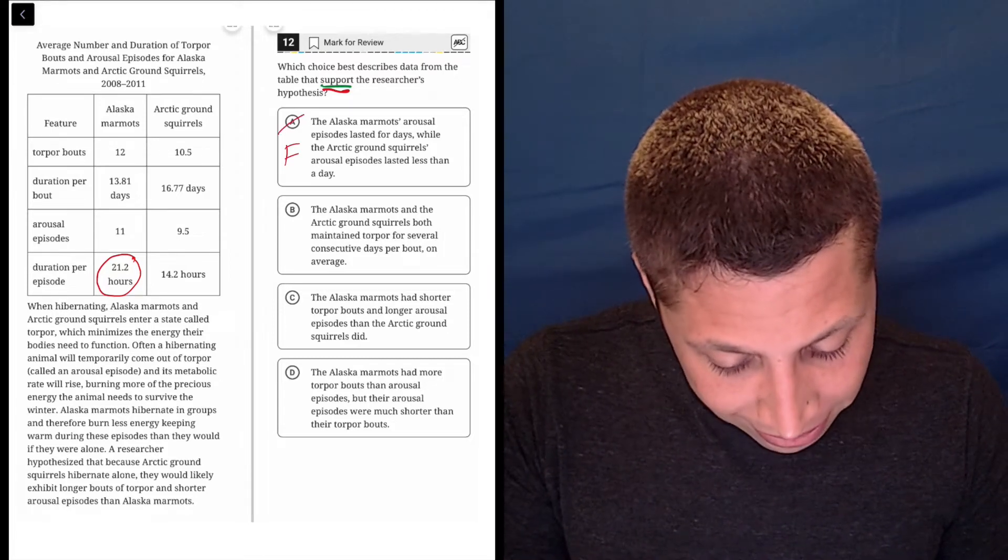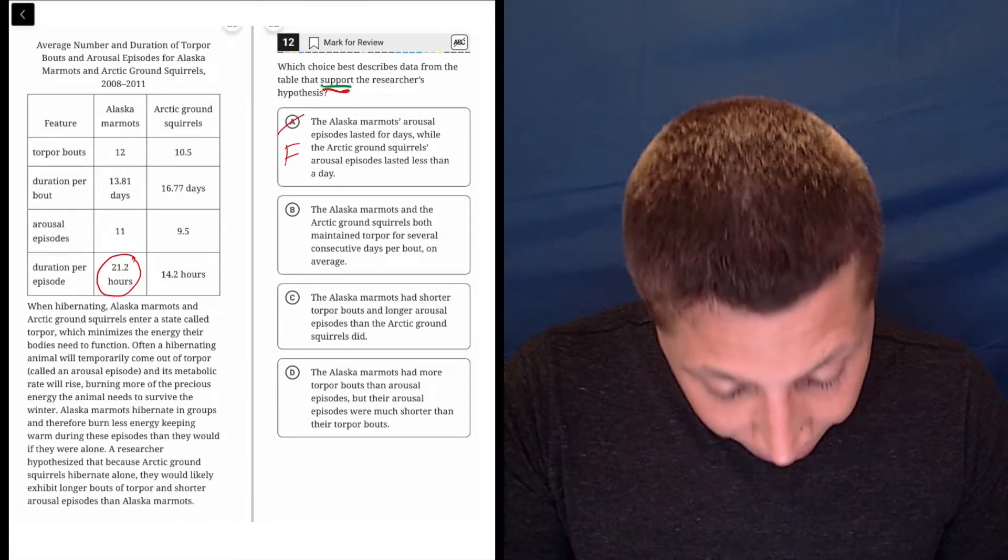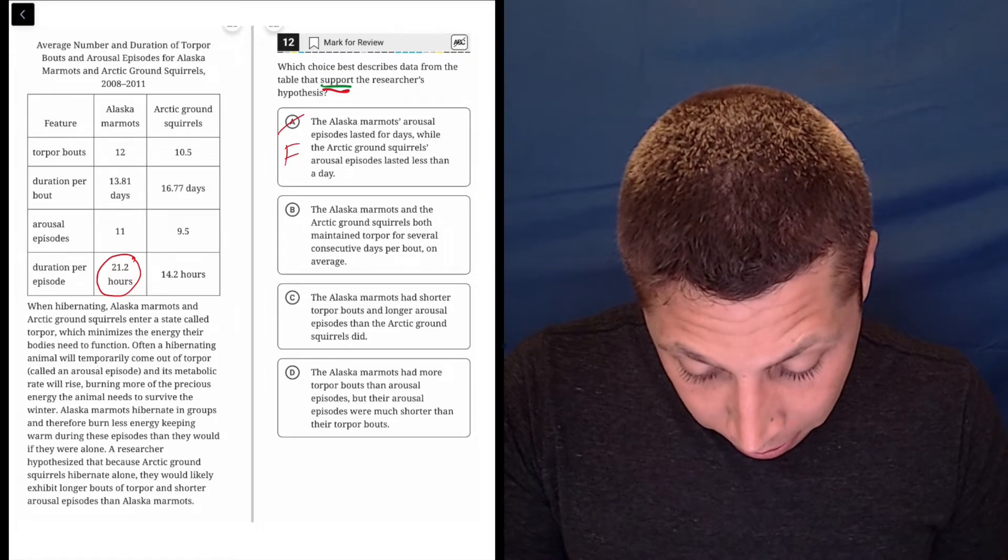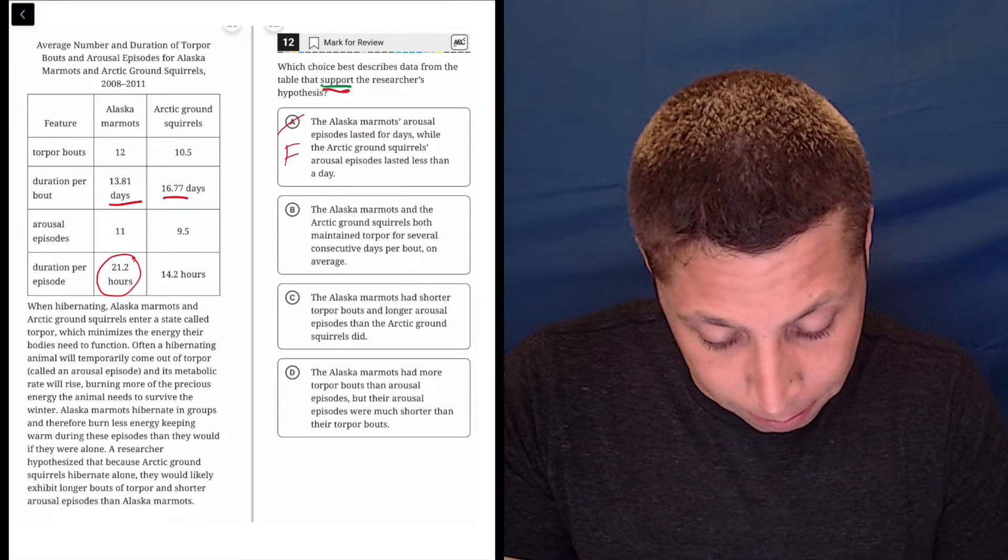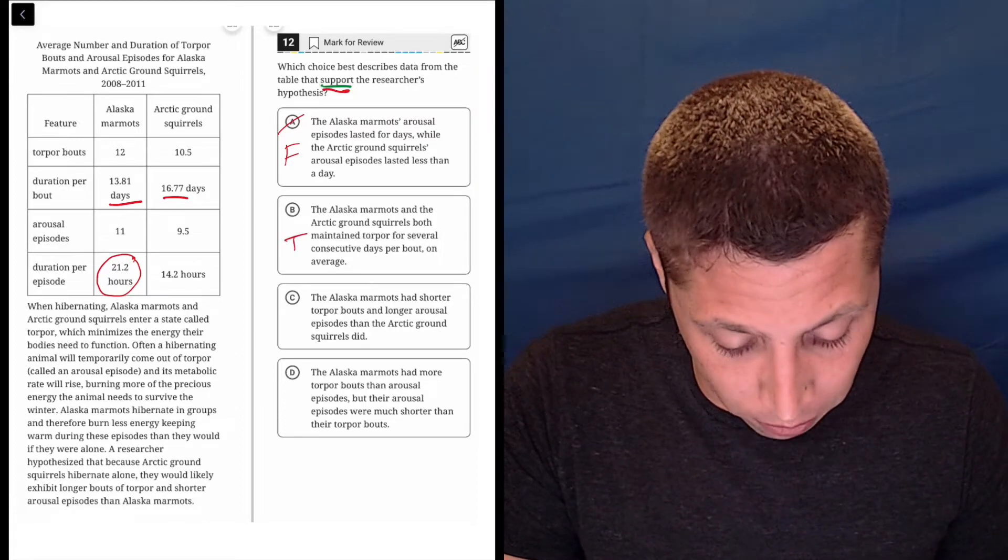The Alaska marmots and the arctic ground squirrels both maintained torpor for several consecutive days per bout on average. So okay, both of these things, torpor, several consecutive days, 13, 16.7, yeah, that seems true. So I don't know if it's right. Maybe there's multiple true answers, so we got to move on.